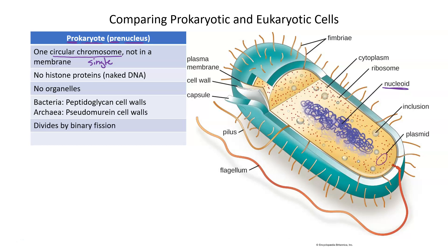Sometimes you will see plasmids in prokaryotes, which are small accessory rings of DNA that are not found in eukaryotes. Unlike eukaryotes, there are no histone proteins present in prokaryotic DNA. We give the term 'naked DNA' to prokaryotes because their DNA is literally just the nitrogenous bases in a single circular strand — no histones, no supercoiling, no nucleosomes; those structures are only associated with eukaryotic cells.